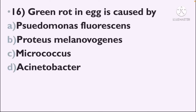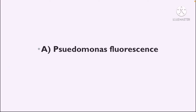Next question: Green rot in egg is caused by — Option A: Pseudomonas fluorescens, Option B: Proteus melanogenes, Option C: Micrococcus, Option D: Acinetobacter. The correct answer is Option A, Pseudomonas fluorescens.